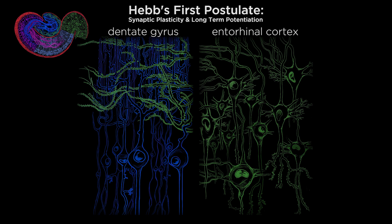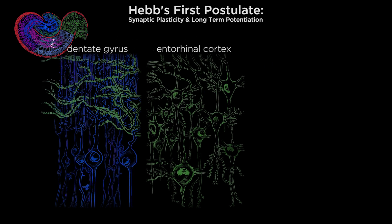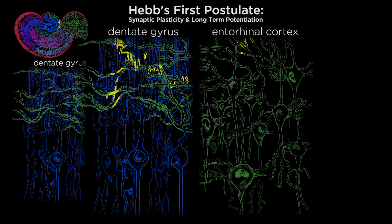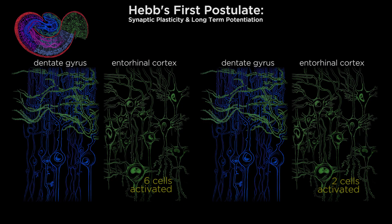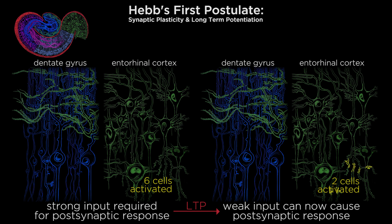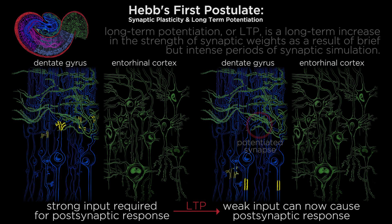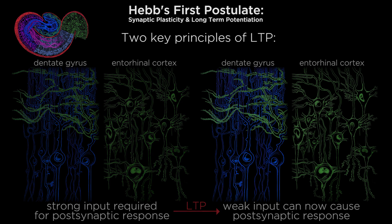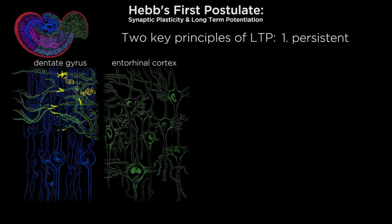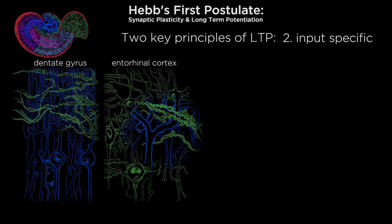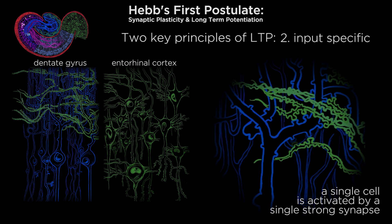Bliss and Lømo, by chance, noted that if they briefly stimulated a group of cells in the entorhinal cortex, the postsynaptic response in the dentate gyrus granule cells was potentiated in the future. This long-term potentiation, or LTP, is a long-term increase in the strength of synaptic weights as a result of brief but intense periods of synaptic stimulation. Two key principles of LTP quickly emerged: first, the persistence of LTP — it can last for a long time, sometimes for days or months after initial stimulation; second, the input specificity of LTP — only the synapses that are activated are potentiated.